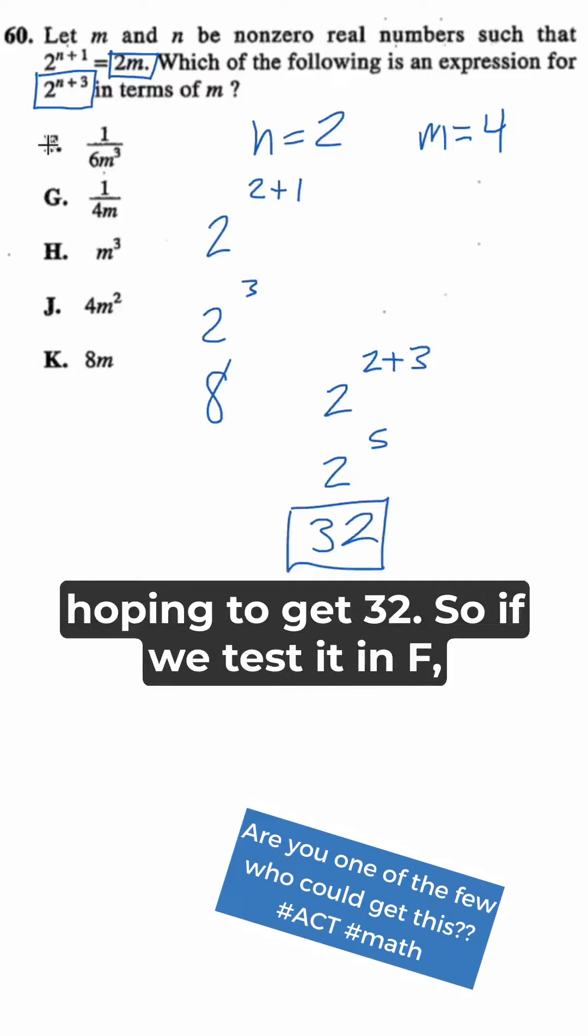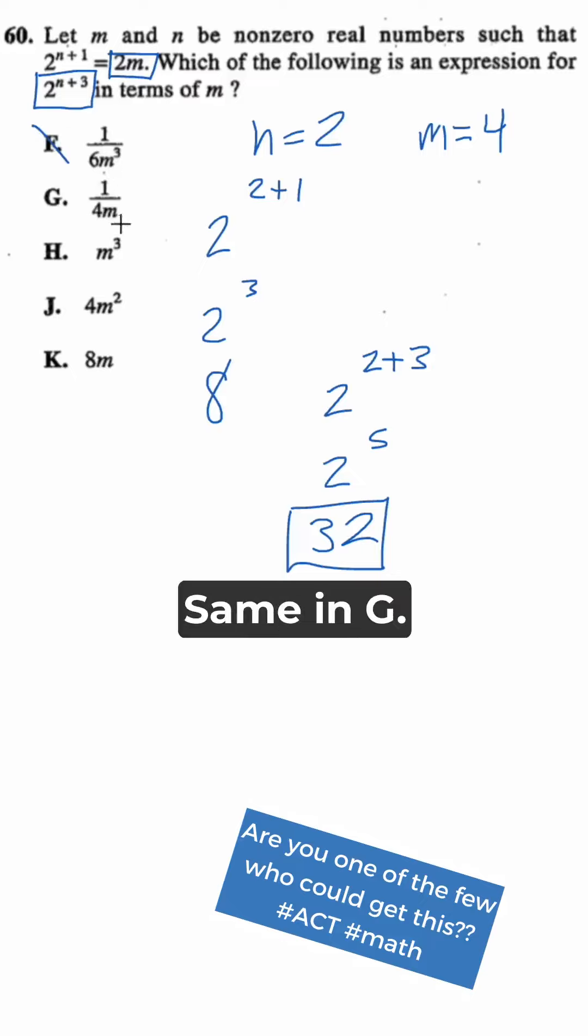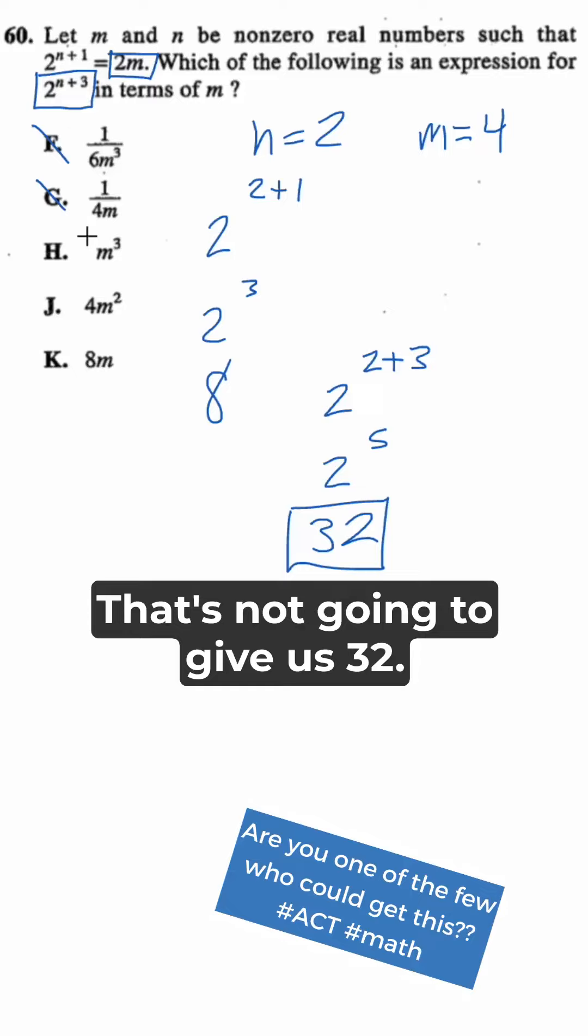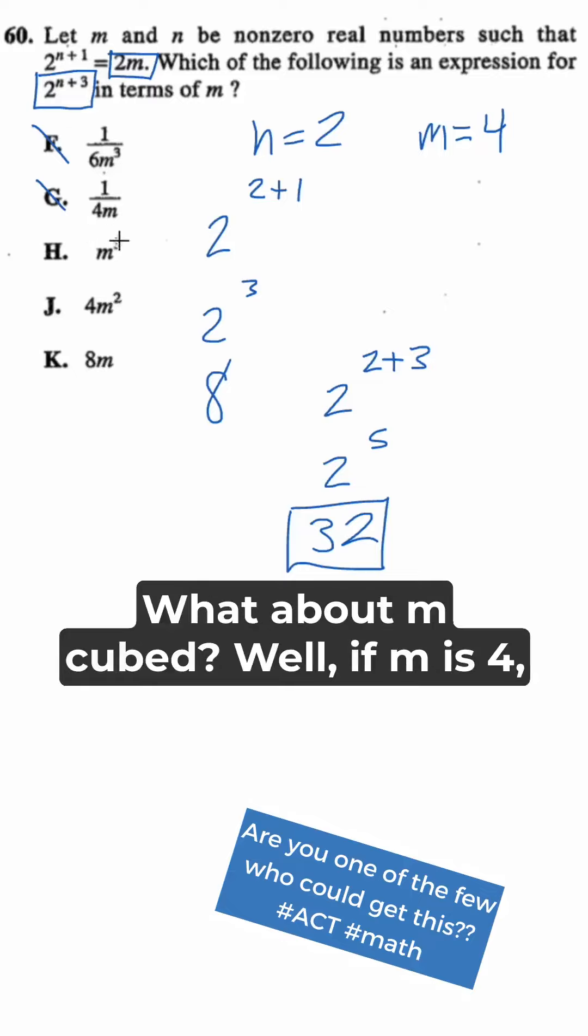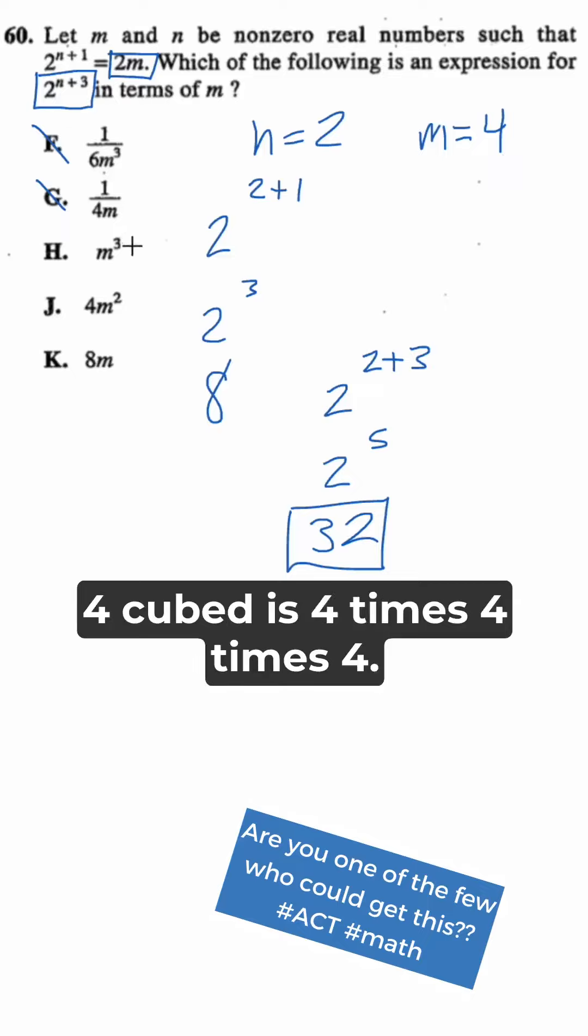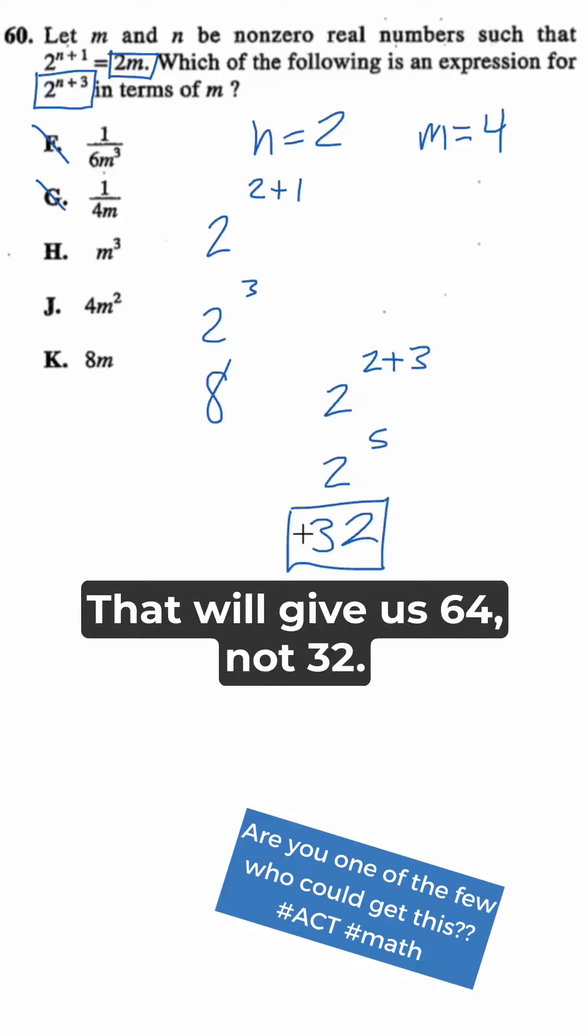So if we test it in F, that's not going to work. It's going to be a fraction. Same in G, that's not going to give us 32. What about m cubed? Well, if m is 4, 4 cubed is 4 times 4 times 4. That's not going to work. That'll give us 64.